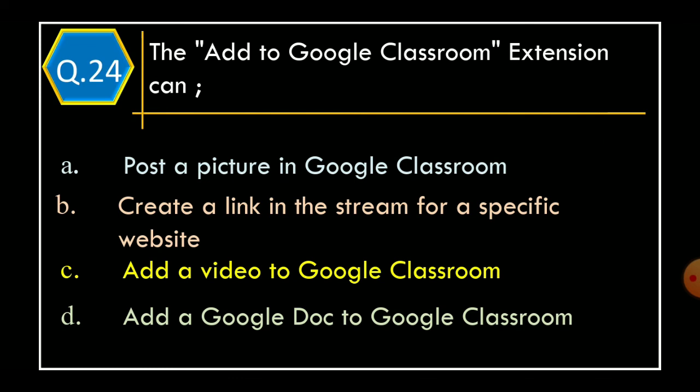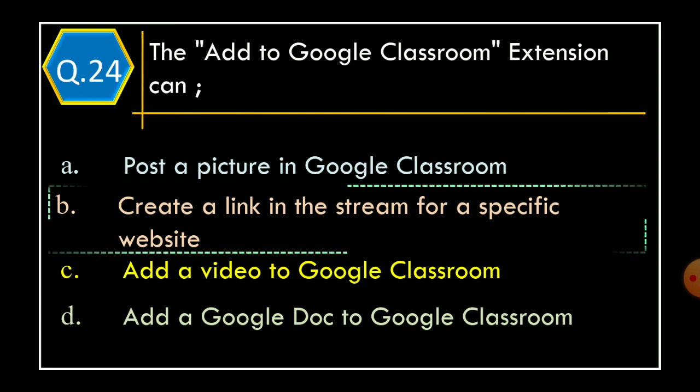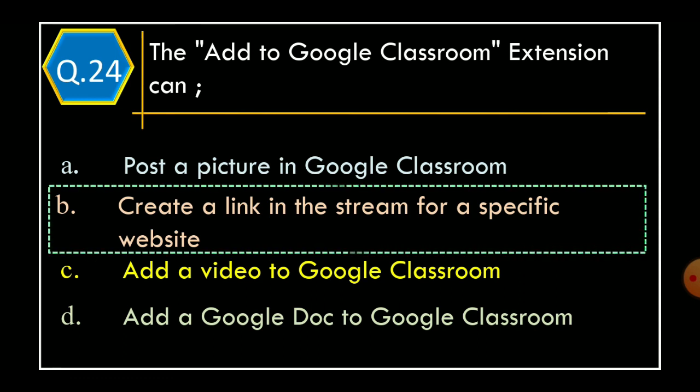Question 24: The 'Add to Google Classroom' extension can — Option A: Post a picture in a Google Classroom, Option B: Create a link in the stream for a specific website, Option C: Add a video to Google Classroom, Option D: Add a Google Doc to Google Classroom. And correct option is Option B: Create a link in the stream for a specific website.